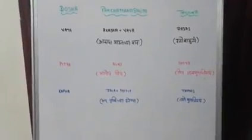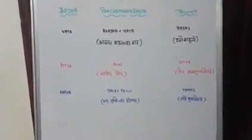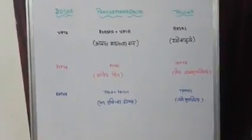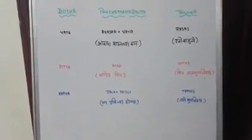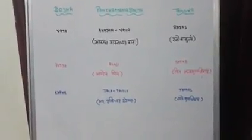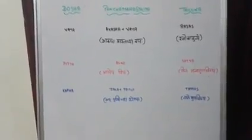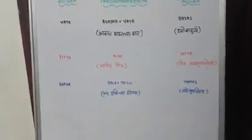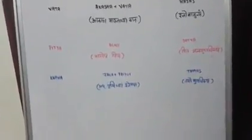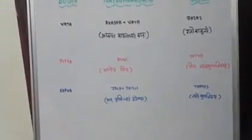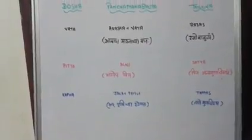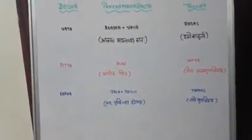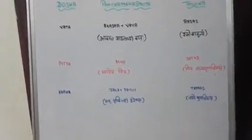Then Pitta: Agneyam Pittam — Agni Mahabhuta constitutes Pitta Dosha. With regards to Triguna, Pittam Sattva Guna Adikhyam — Sattva Guna is dominant in Pitta Dosha. And lastly, with Kapha: Apritibhyam Slesha — Jala plus Prithvi constitutes Kapha Dosha, and Tamoguna Adikhyam — Kapha is having Tamoguna predominance.